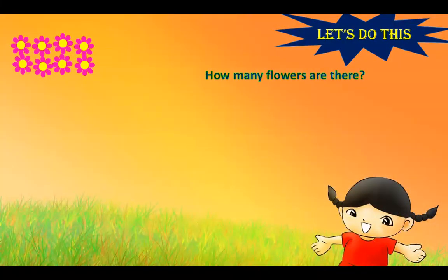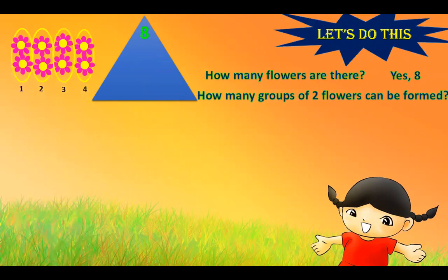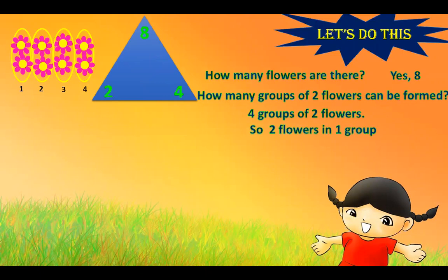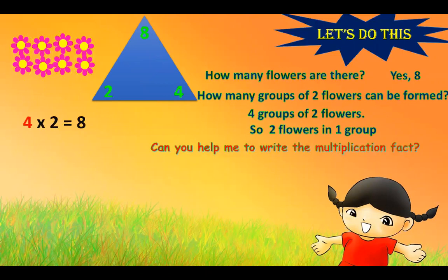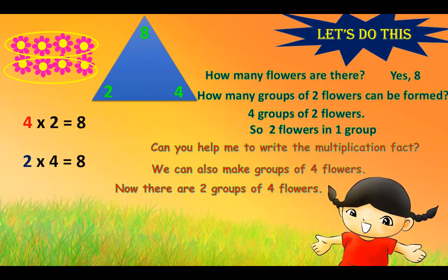Now let's do this. How many flowers are there? Yes, eight. There are eight flowers. So how many groups of two flowers can be formed? One, two, three, four — four groups of two flowers, with two flowers in one group. Can you help me write the multiplication fact? Four times two is eight. We can also make groups of four flowers: one and two, so two times four is eight.